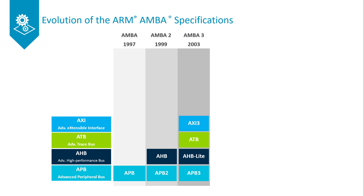AXI, the third generation of AMBA interface defined in the AMBA 3 specification, is targeted at high performance, high clock frequency system designs, and includes features that make it suitable for high speed, sub-micrometer interconnect.